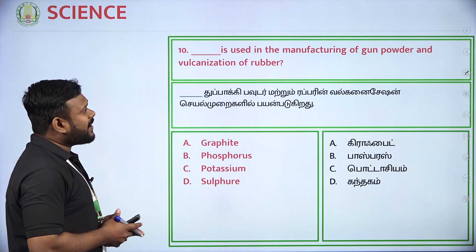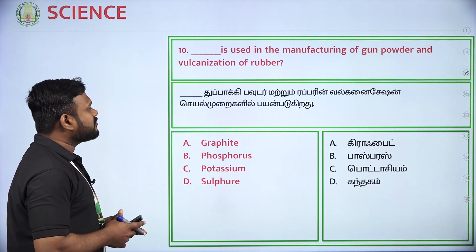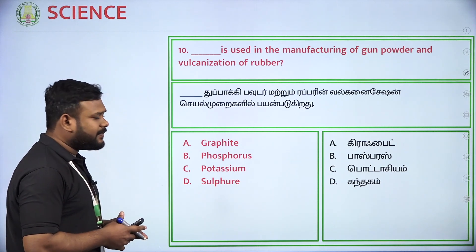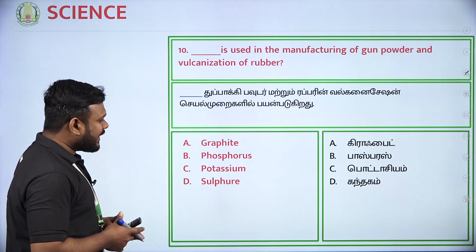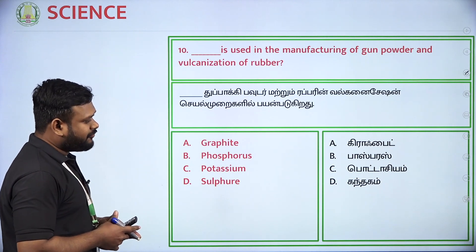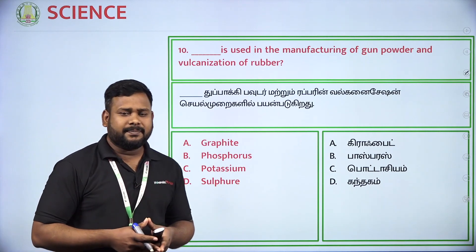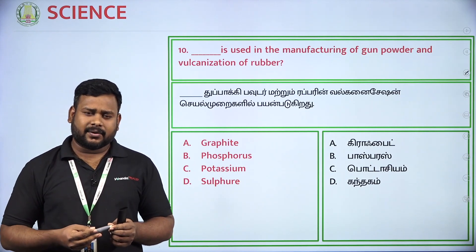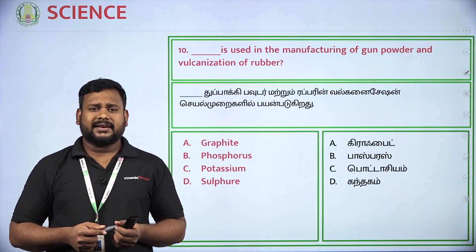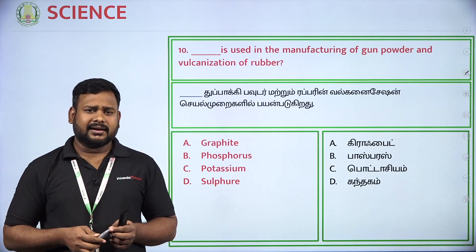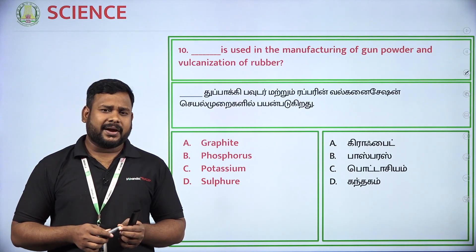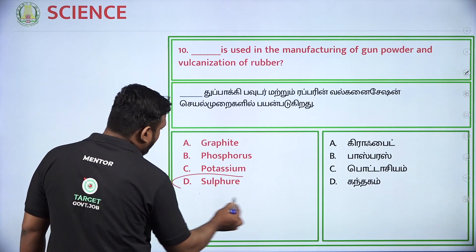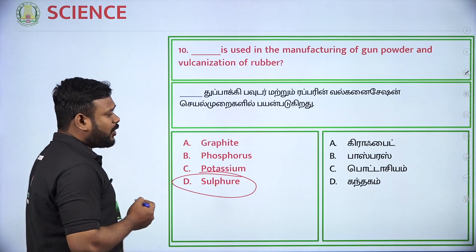Dash is used in the manufacturing of gunpowder and vulcanization of rubber. Options: graphite, phosphorus, potassium, sulfur. The applications of non-metals — gunpowder uses sulfur. So option D — sulfur — is the answer.